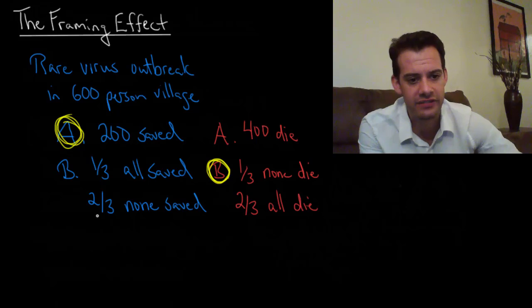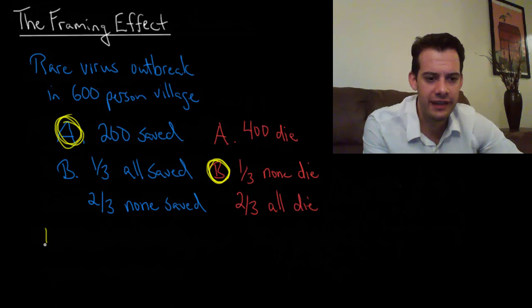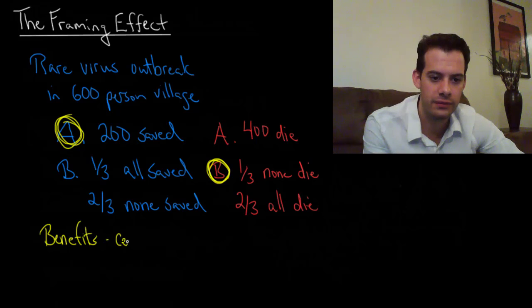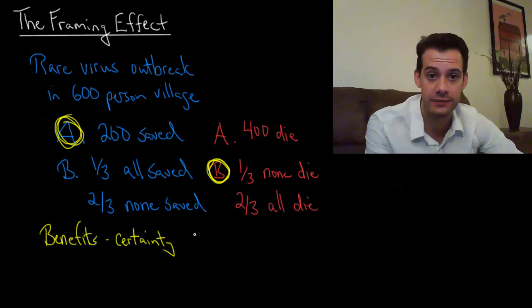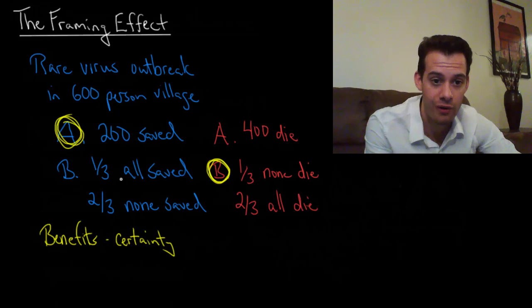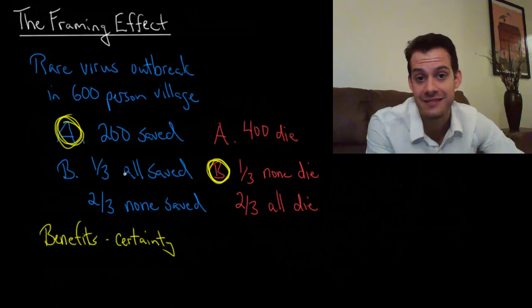So based on this Tversky and Kahneman suggested that when it comes to thinking about benefits people like to be certain. They like certainty. They like to know that this is what I'm getting. This is the benefit of this program. 200 people are going to be saved. That sounds good.